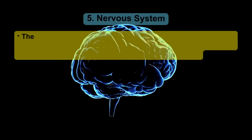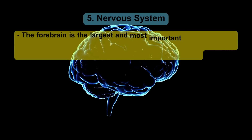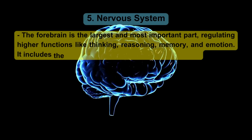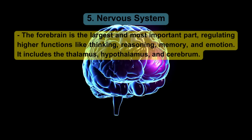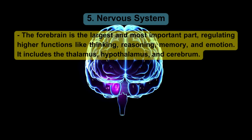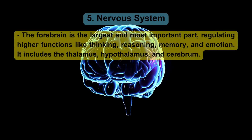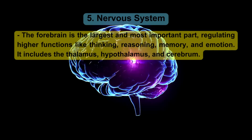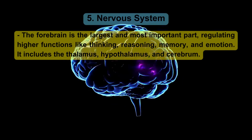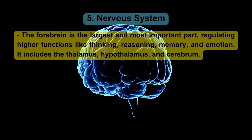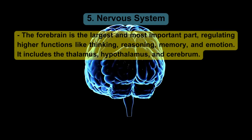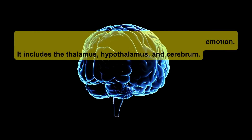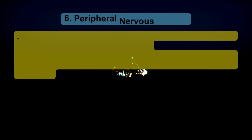The forebrain is the largest and most important part, regulating higher functions like thinking, reasoning, memory, and emotion. It includes the thalamus, hypothalamus, and cerebrum.